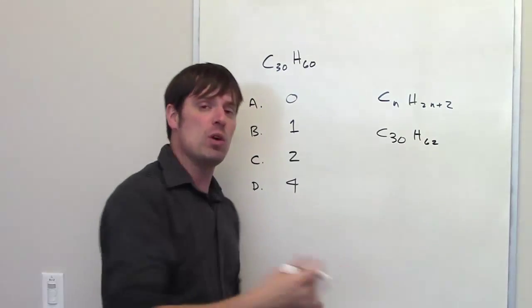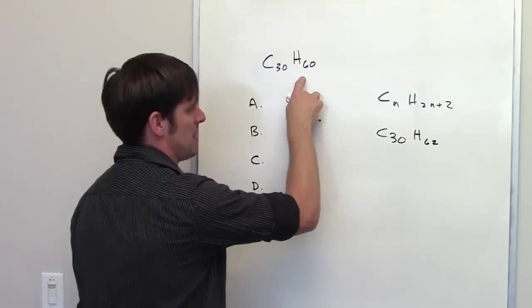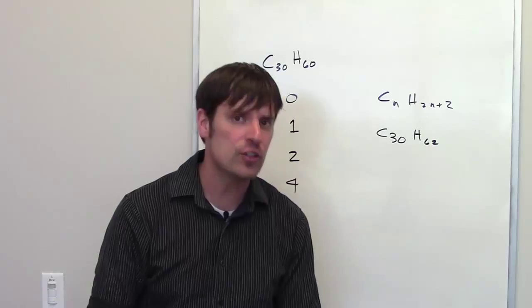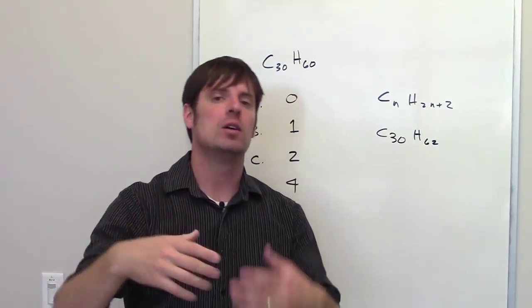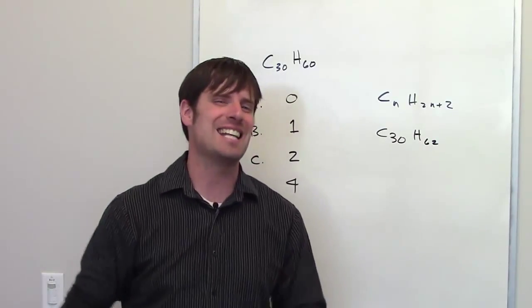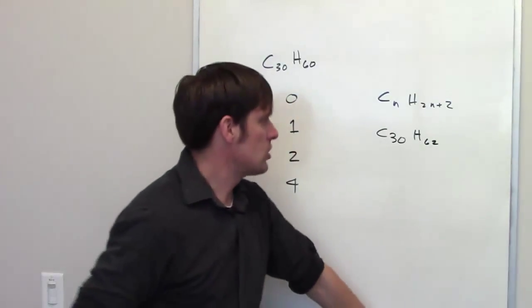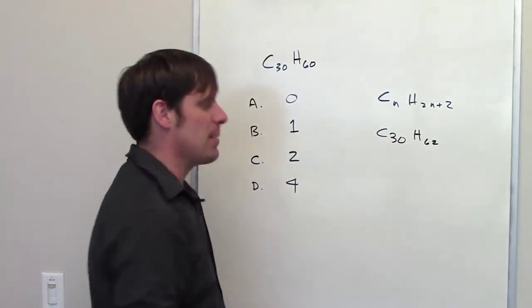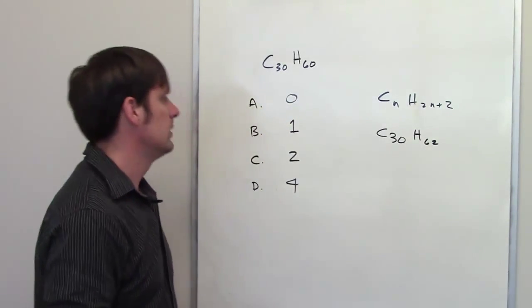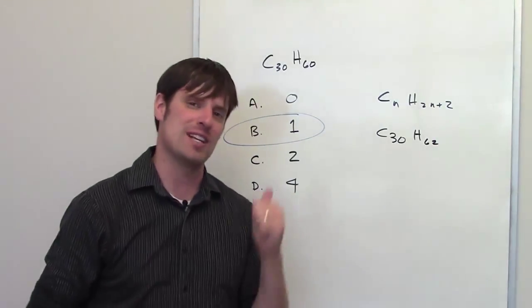Now you'll notice that this is the formula that I would have if I had no rings, no double bonds. This is the formula that I'm given. How many degrees of unsaturation do I have? Well, remember, a degree of unsaturation is either a double bond or a ring. And every time I add one double bond or one ring, I decrease my number of hydrogens by 2. So I've gone from 62 to 60. So how many double bonds or rings have I added? One. Which means the number of degrees of unsaturation in this problem is one. And the correct answer is B.